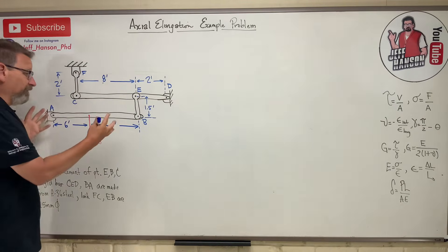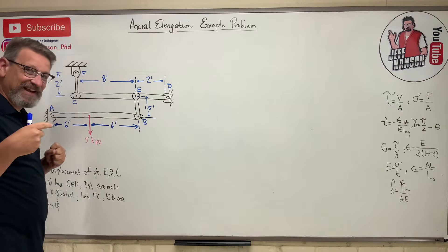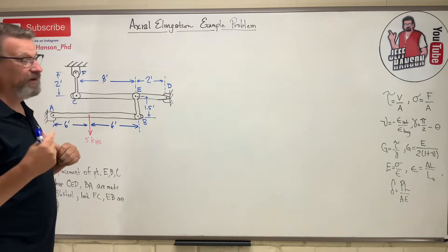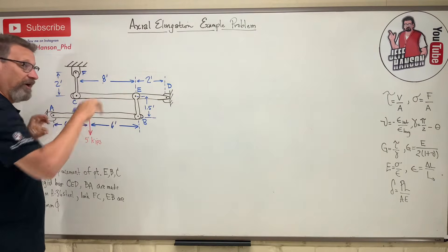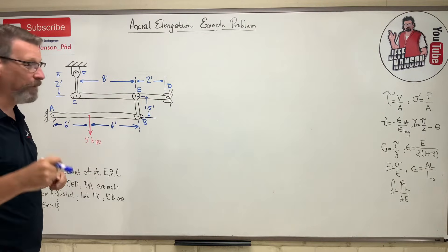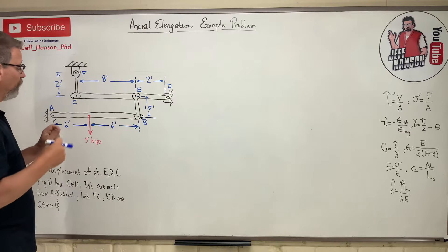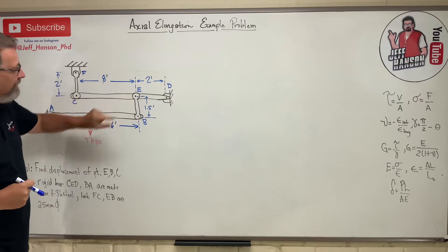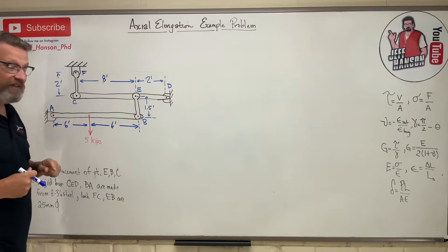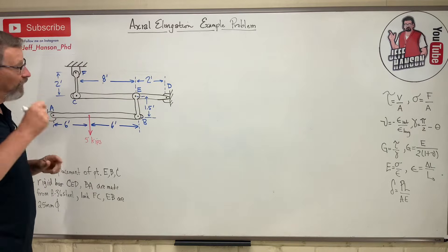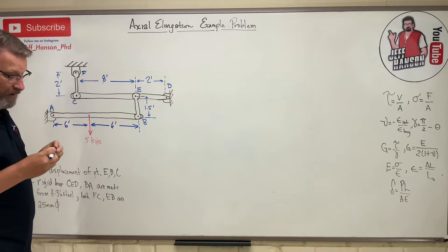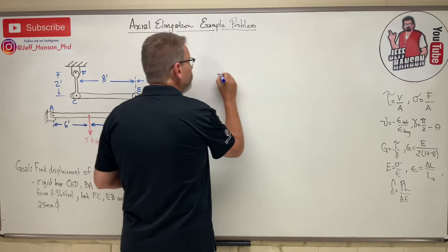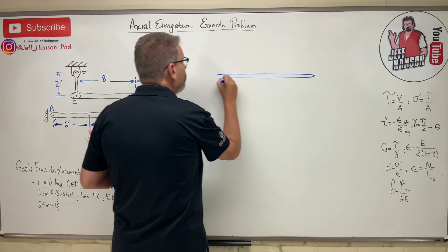I can't solve this, so you remember way back to statics how to solve this kind of problem? This was called a frame problem, right? We've got to take this thing apart and draw a free body diagram of the piece parts, because what we want to do is we want to know what is the force in this member and what is the force in that member due to that five kip load down there. So let's draw a couple of free body diagrams.